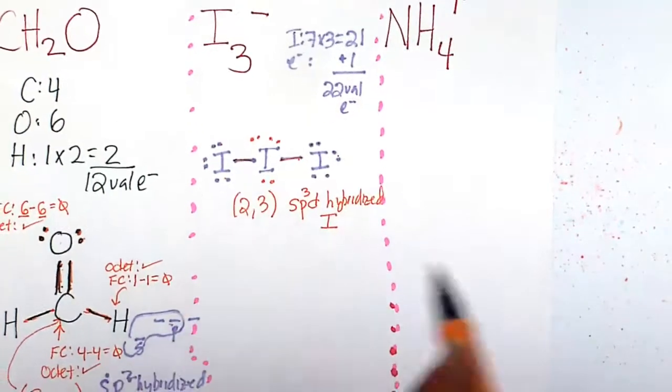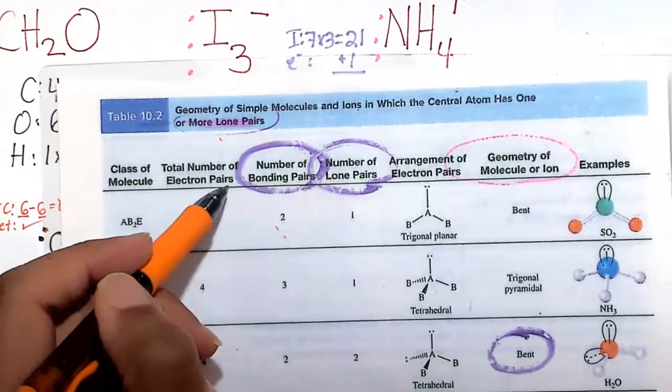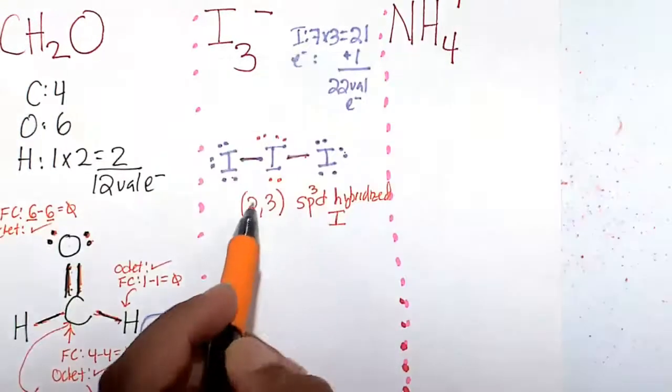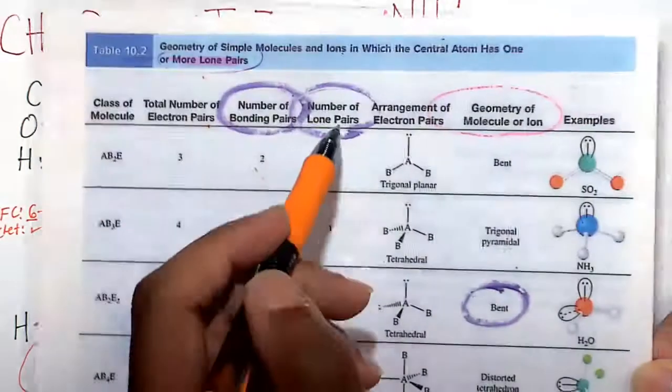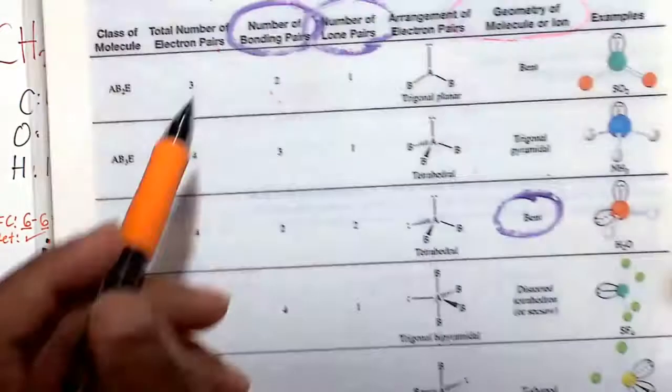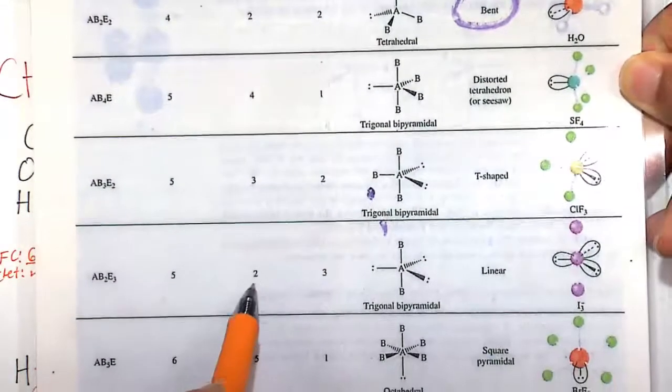And two bonds and three lone pairs. So let's look that up in our table in which the central atom has lone pairs. So the number of bonding pairs here is going to be two. And then the number of lone pairs here is going to be three. Two bonds, three lone pairs.